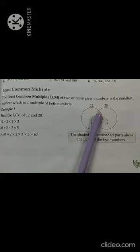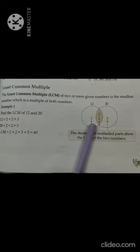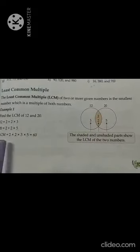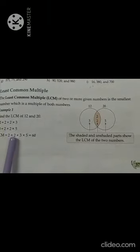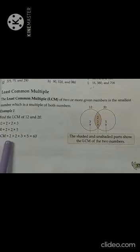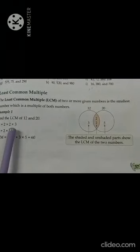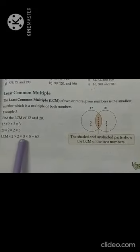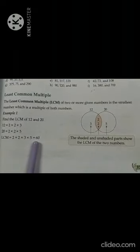Now observe which are the common factors. Is 3 common here? No. 2 is common in both numbers 12 and 20, so we will take 2 only once. LCM equals 2 × 2, because both numbers have the common factor 2, written only one time. That is 2 × 2 × 3 × 5. Multiply all the digits and you get the LCM. The shaded and unshaded parts show the LCM of the 2 numbers.